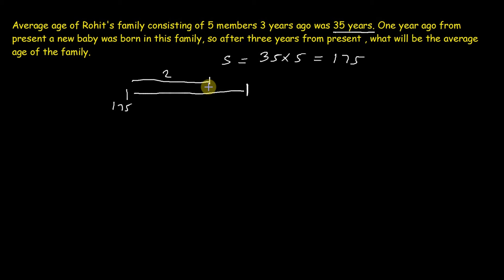Till this point baby was not born. So complete age of all 5 members would be 175 plus 2 multiply by 5 because all 5 members is increased by 2 years and this is equal to 185 years.